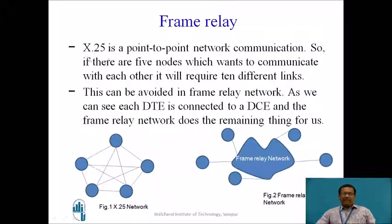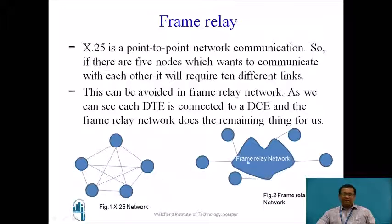X.25 is a point-to-point network communication. If there are 5 nodes which want to communicate with each other, it will require 10 different links. These are the 10 different links between nodes. This is avoided in a Frame Relay Network.